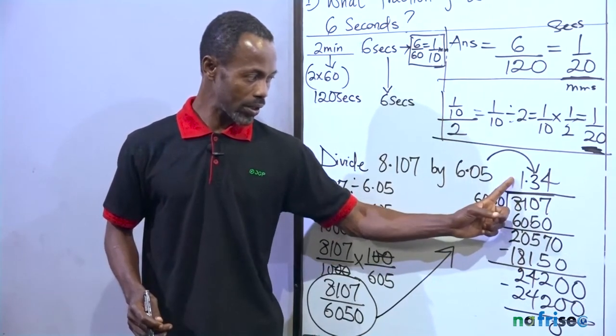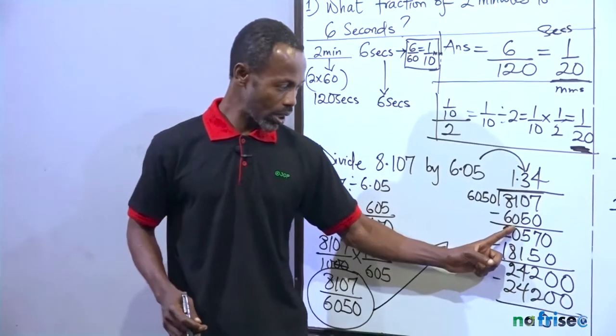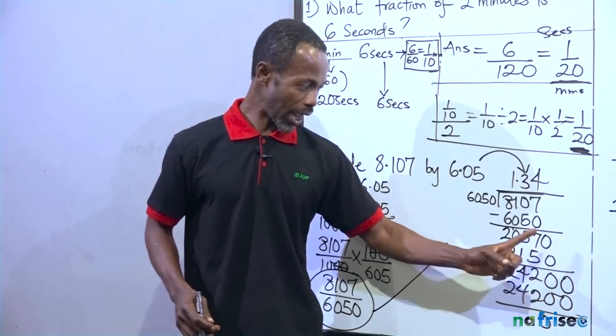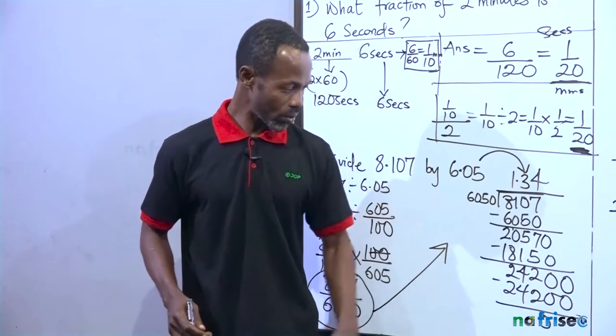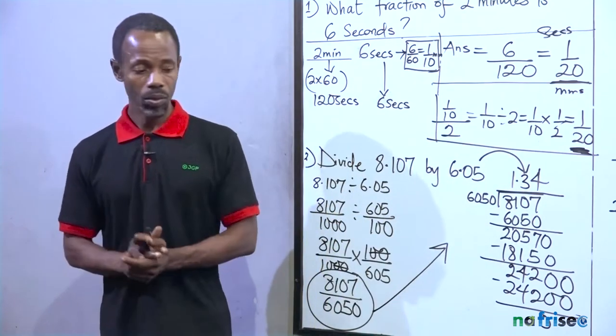Because if you want to divide in this situation, you use your long division. So 6,050 divided by 8,107 is 1. 1 times 6,050 is the same. You minus this, you have 2,057. Since 2,000 cannot divide it, I added a zero after the decimal point. Then 3 was the first number. So for you in that division, that is what you get. That's the answer to that question.